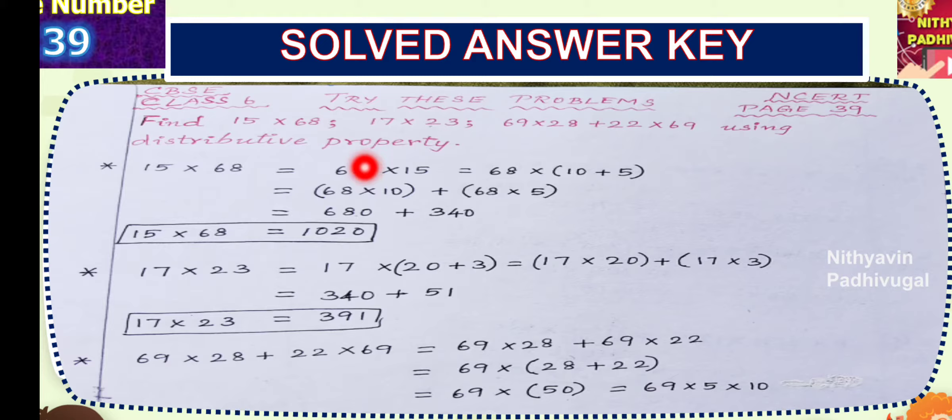Let us see how to solve these problems using distributive property. First one is 15 times 68. It can be rewritten as 68 times 15. This is called commutative property. But, we must use distributive property. For distributive property, we must have sum of two numbers. For that, let us split number 15 as sum of 10 and 5.